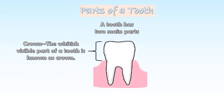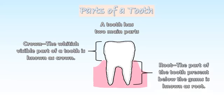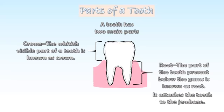Crown — the whitish visible part of a tooth is known as crown. Root — the part of the tooth present below the gums is known as root. It attaches the tooth to the jawbone.